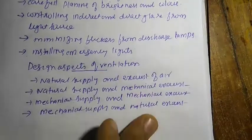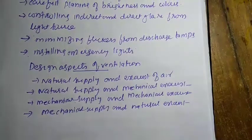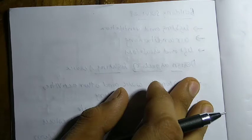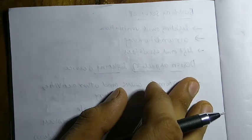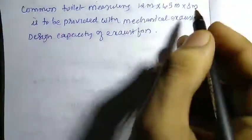Now we are going to solve a problem on ventilation design. The question involves a common toilet with dimensions 20 m × 4.5 m × 3 m. It uses mechanical exhaust — it is a bathroom — and we need to find the capacity of the exhaust fan.